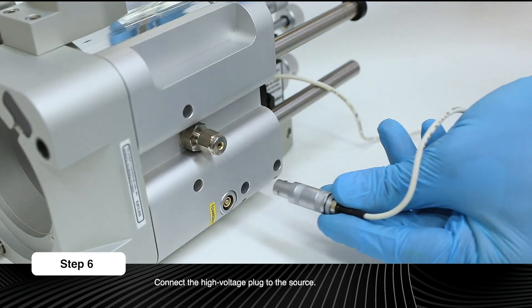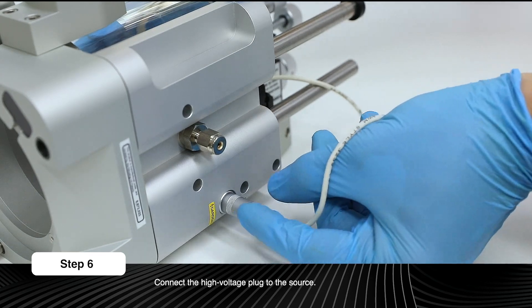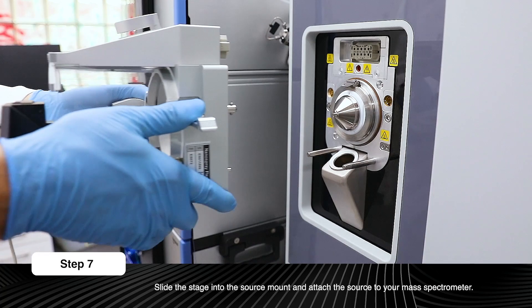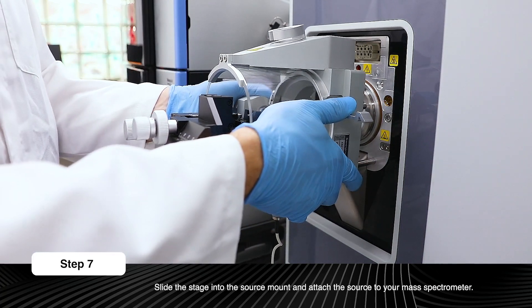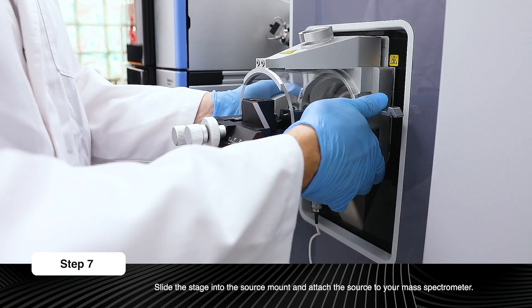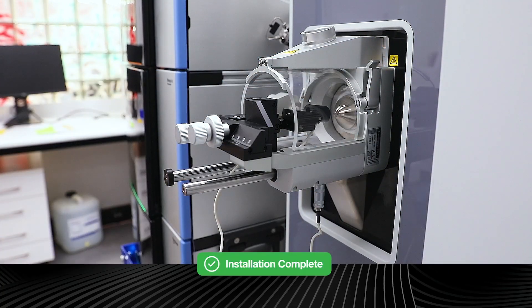Connect the high voltage plug to the source. Slide the stage into the source mount and attach the source to your mass spectrometer. The Nanospray Flex Adapter is now installed and ready for use.